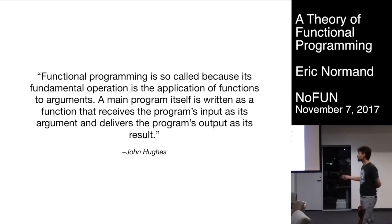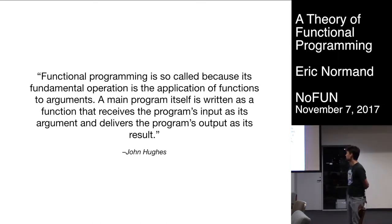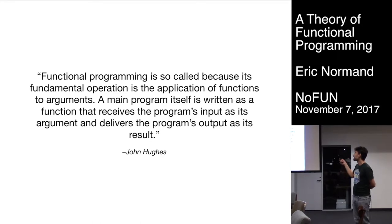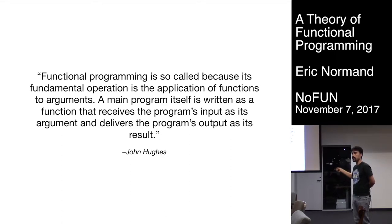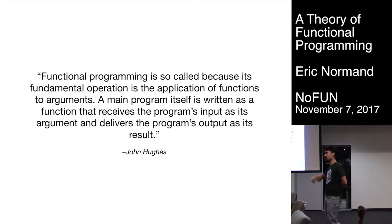So this is John Hughes — no small fry in the functional programming world. He doesn't actually define it, but he talks about it in a defining kind of way. Functional programming is so-called because its fundamental operation is the application of functions to arguments. He talks about how you can write a program that's just one function made out of other functions, and whatever arguments you pass in on the command line, it'll just output the result.